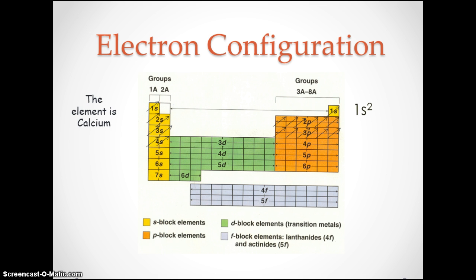So now we just count up what we've gone over. In this case, we've gone through two 1s's, so 1s². We've gone over two 2s's, so we write 2s². We went over how many 2p's? That's right, six. So 2p⁶. How many 3s's have we gone over? That's right, so we'd write 3s². Then how many 3p's did we go over? That's right, 3p⁶.